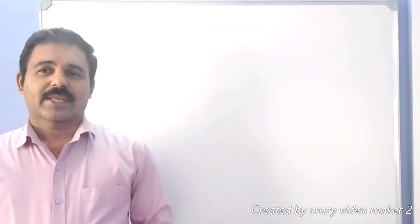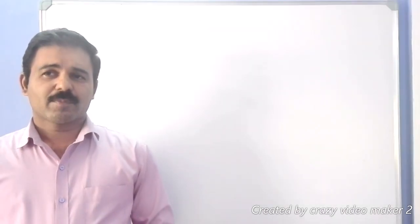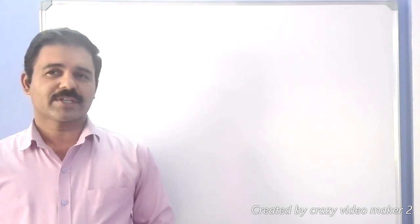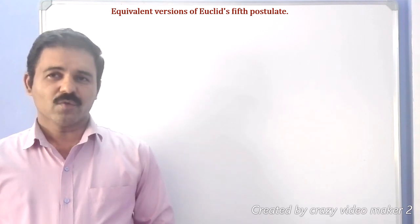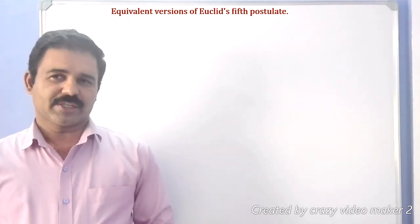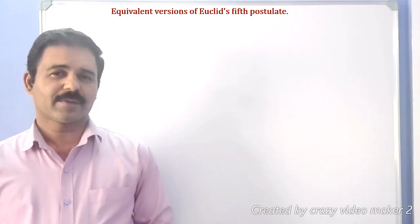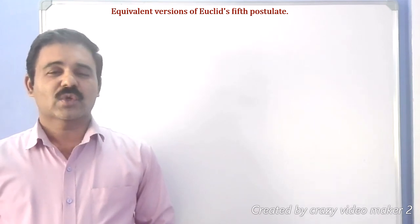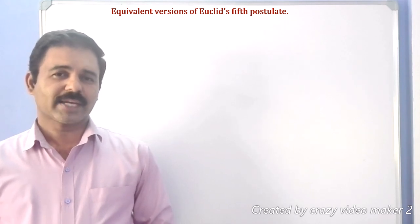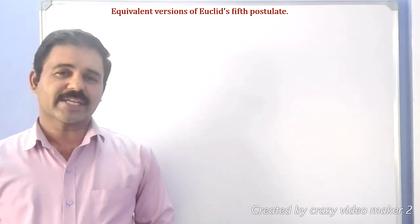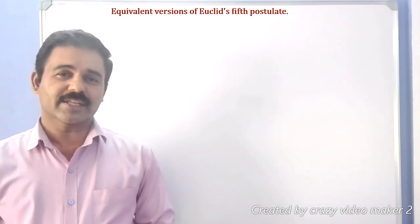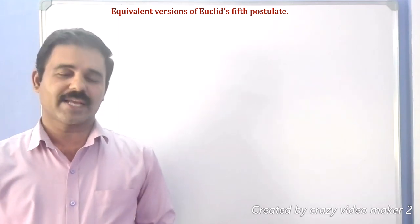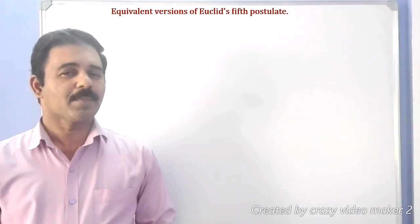Dear student, in the previous class we learned about Euclid's 5th postulate. In this class we will study about equivalent versions of Euclid's 5th postulate. Euclid's 5th postulate says that a line falling on two other lines such that the sum of the interior angles on the same side of the line is less than two right angles, or less than 180 degrees, then both the lines are intersecting each other on that same side of the line.